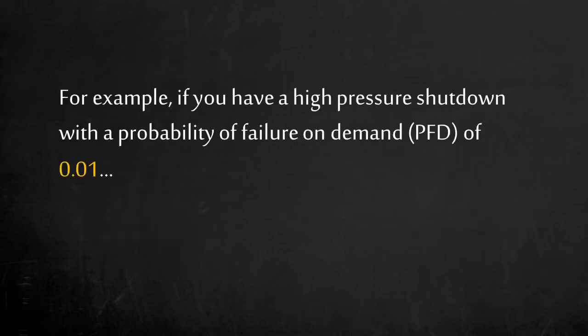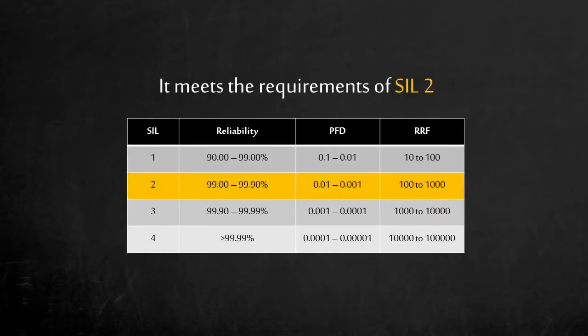For example, let's say we have a high-pressure shutdown that has a probability of failure on demand of 0.01, or in other words, 1% chance of failure on demand. The high-pressure shutdown meets the requirements of SIL 2. Safety functions that meet this safety integrity level are capable of achieving a risk reduction factor of 100 to 1,000.